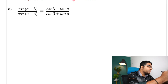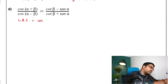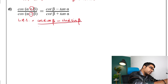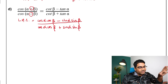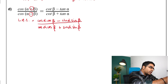Applying this formula, the left-hand side becomes: the numerator is cos(α)cos(β) minus sin(α)sin(β), and the denominator is cos(α)cos(β) plus sin(α)sin(β). Now we look at our goal on the right-hand side to determine the next steps.